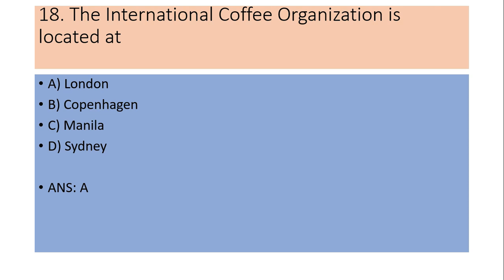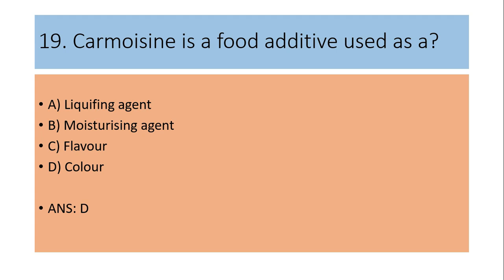Eighteenth question: The International Coffee Organization is located at London, Copenhagen, Manila, or Sydney? Answer is A: London. International Rice Research Institute is situated at Manila.